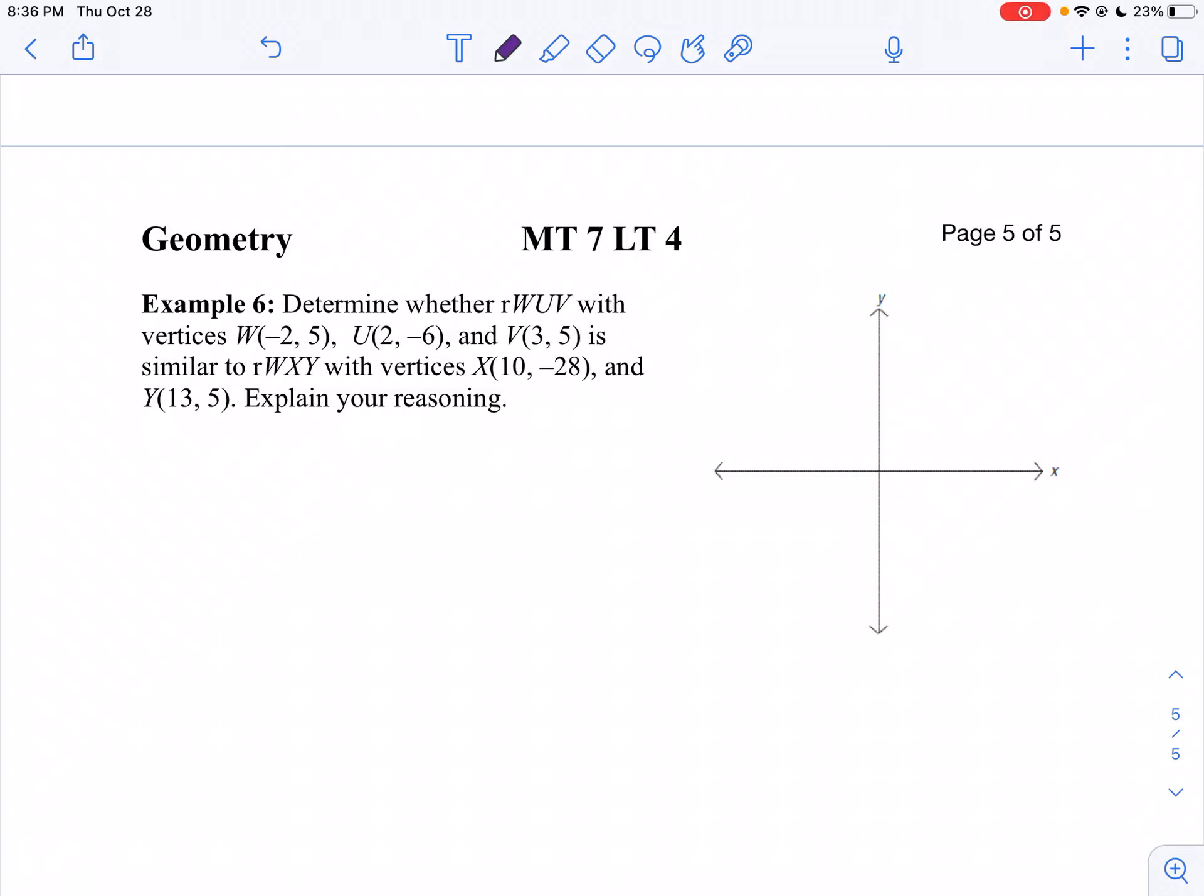In our last example, we're going to look at two triangles here on the coordinate plane again. This time, W is going to be at negative 2 and 5. So we'll say W is at negative 2 and 5.